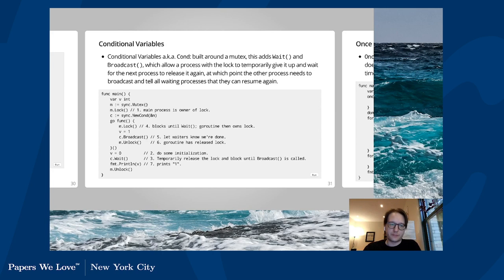Once is a Go construct that ensures a function will only be called once. Any function you pass to Once via Do will be run once — it doesn't matter what function you give. You could give different functions each time; Do will only execute whatever it's given once. There's not actually a lot of usage of conditional variables in the examples they use, which may be a sign of their unpopularity.